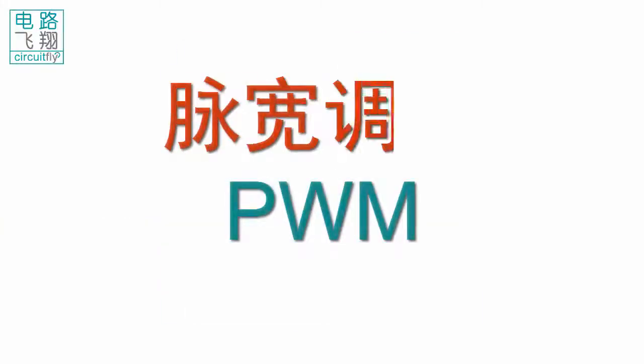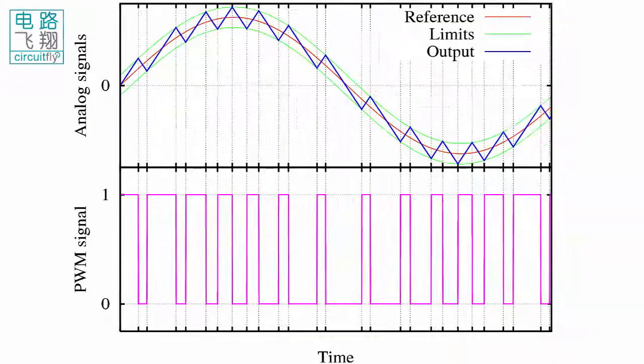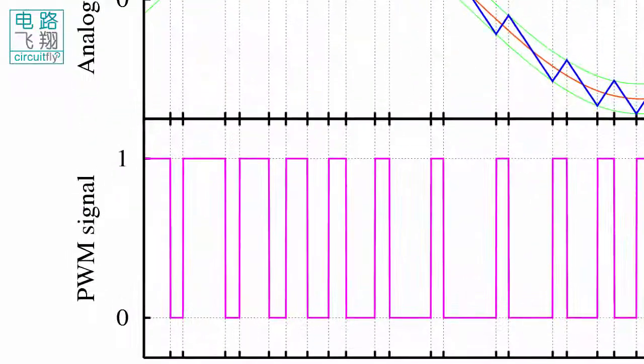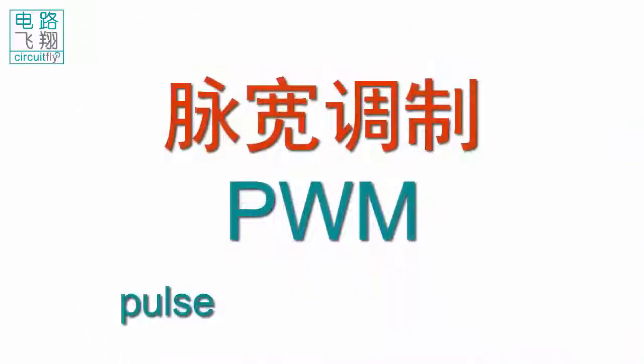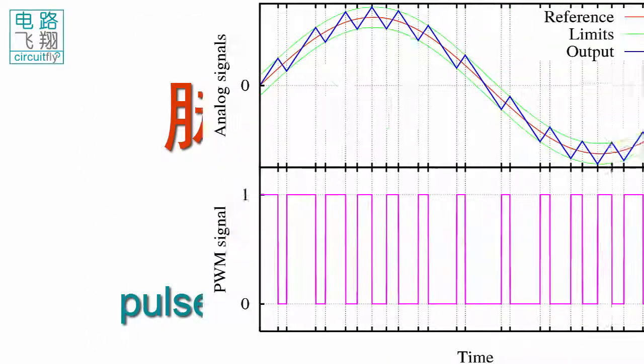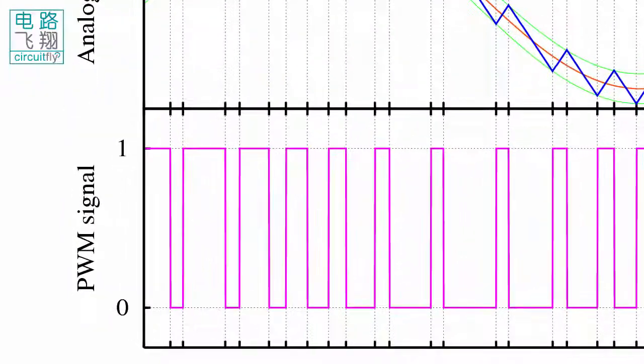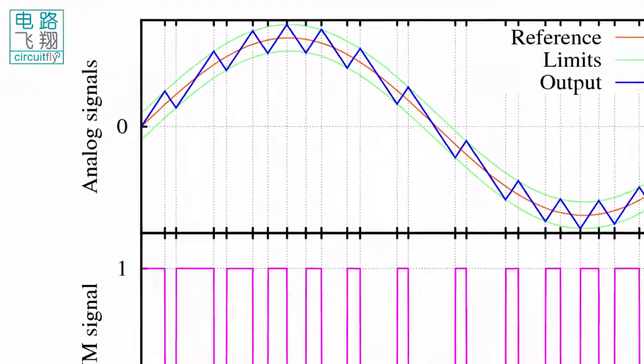PWM 是脉宽调制的缩写。PWM 是一种用数字信号来获得模拟电压的技术。Pulse width modulation, or PWM, is a technique for getting analog results with digital means.